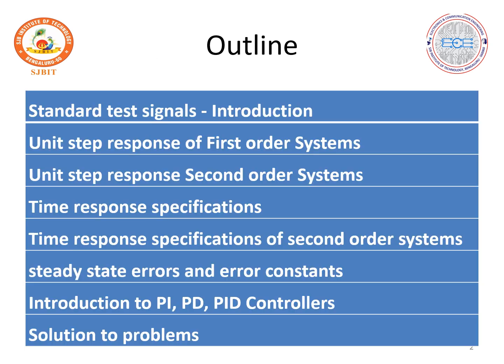Coming to the outline of this module: first we will discuss about the standard test signals which are used to determine the time response of the system. Among these standard signals, the unit step signal is taken as the standard signal used to find out the step response of the first order system and second order system. We will try to find the unit step response — that is, first and second order system using the corresponding time response analysis. Then you will learn about time response specifications of second order and first order system, and we will discuss about steady state errors and error constants.